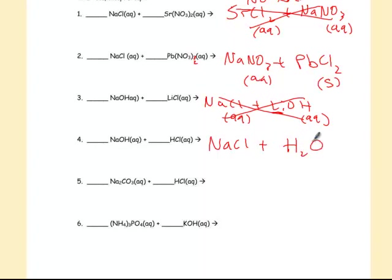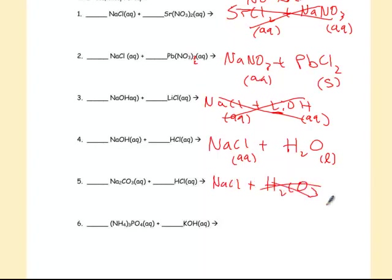Next: NaCl plus HOH. HOH on the right-hand side is water — you can rewrite it as H₂O. That product is aqueous as a chloride, and water is a pure liquid. When you make a pure liquid like water, a reaction does occur. Then NaCl plus H₂CO₃ — there's H₂CO₃, which gives H₂O and CO₂. Therefore, a reaction does occur and you would have to balance it.